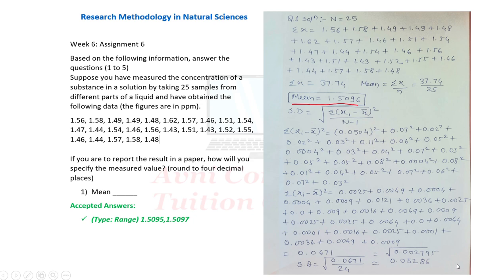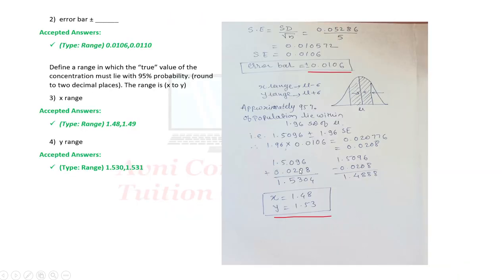This is the standard deviation. Now, standard error = standard deviation divided by square root of n = 0.05286 divided by 5 = 0.010572. The standard error equals 0.0106. The range is as shown.